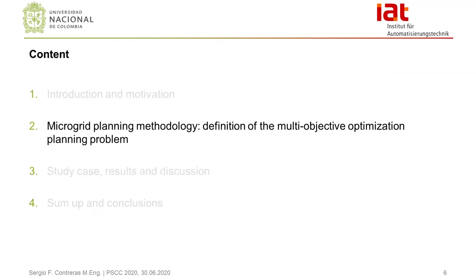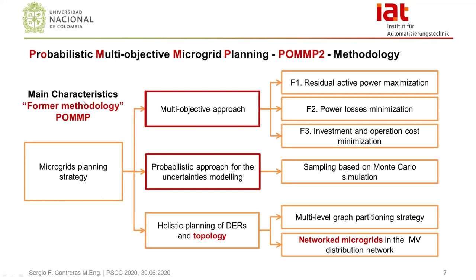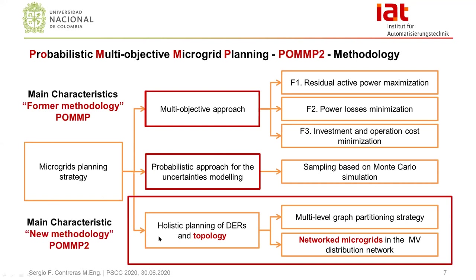Before analyzing the new methodology POM2, the planning strategy in the former methodology POM focused on decision-making for the size and location of distributed energy resources in the microgrid, using a true multi-objective approach and a probabilistic approach for uncertainty models. These two characteristics are maintained in POM2, while the main contribution of POM2 is to propose a strategy to holistically consider the size and location of distributed energy resources and the microgrid topology as part of the methodology. A multi-level graph partitioning technique is used for cluster formation and definition of medium voltage network microgrids.